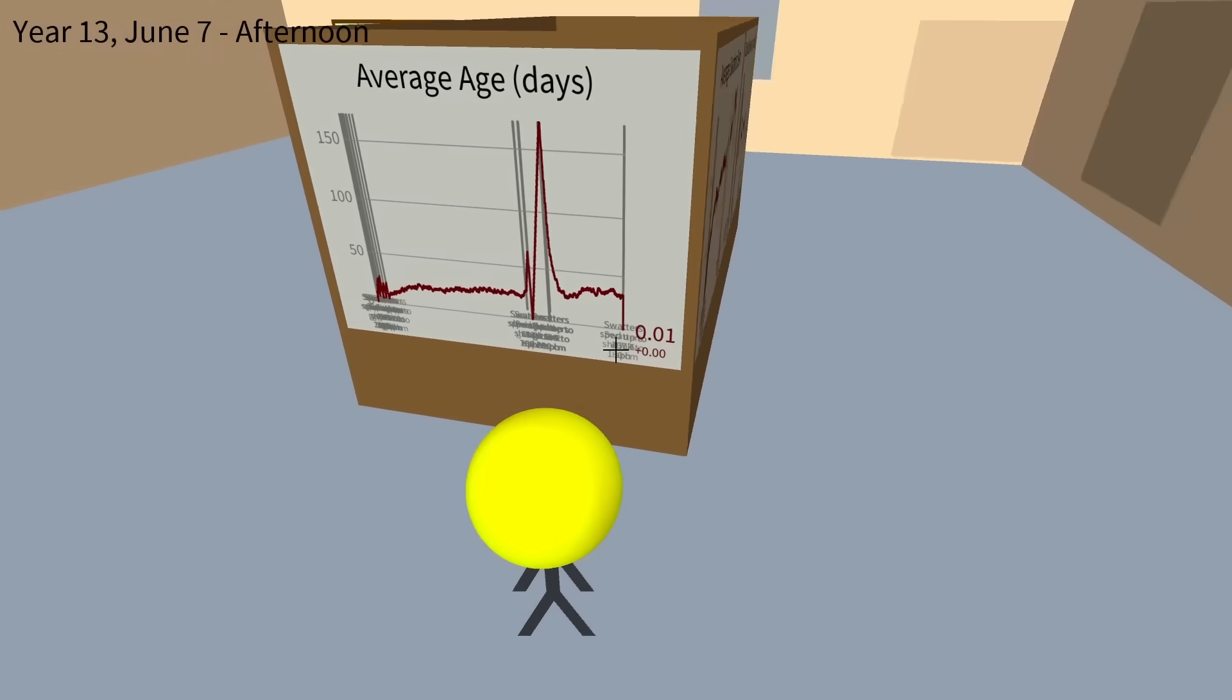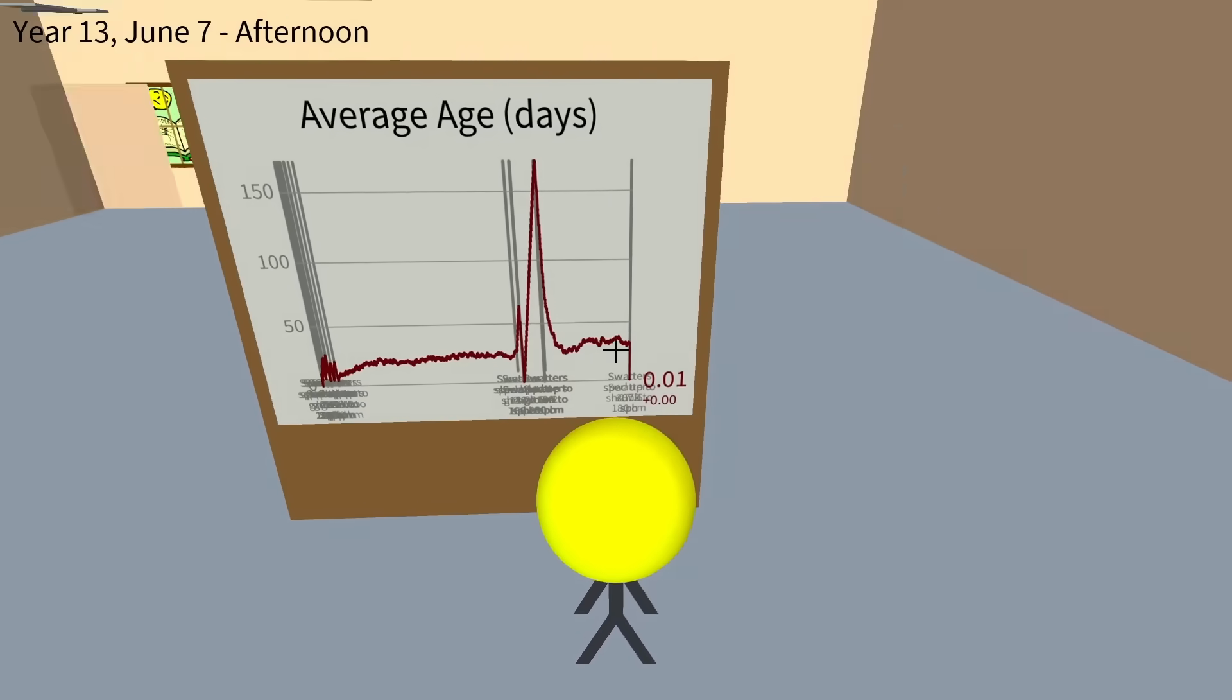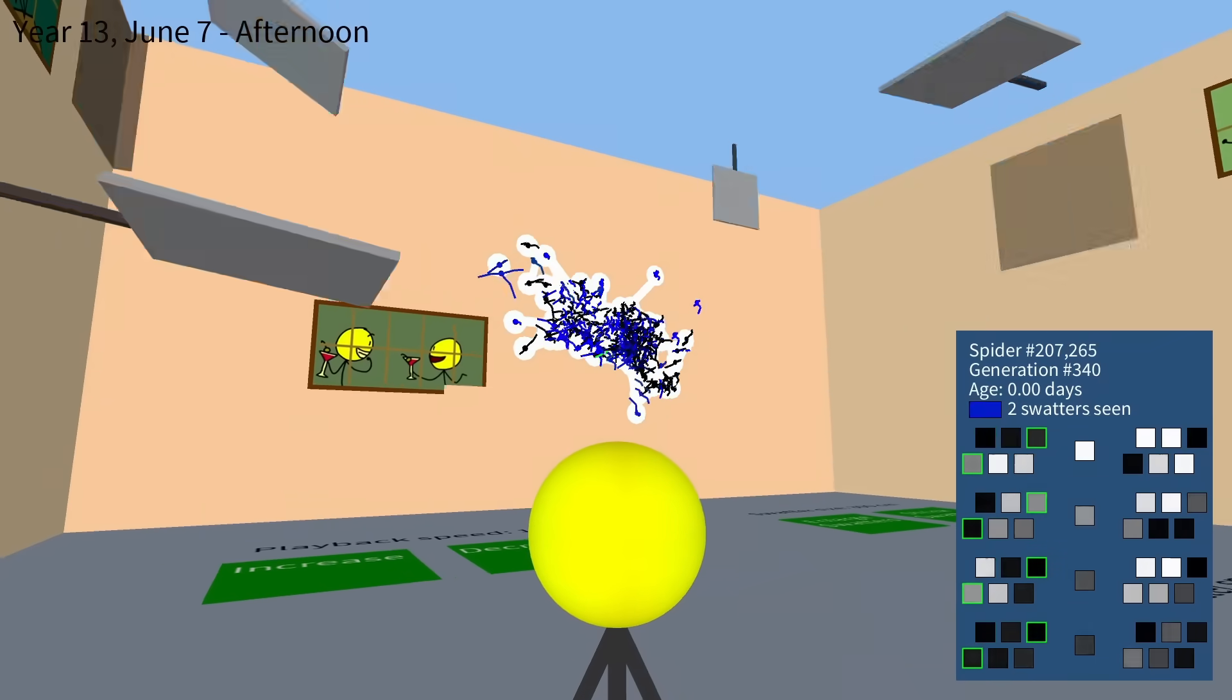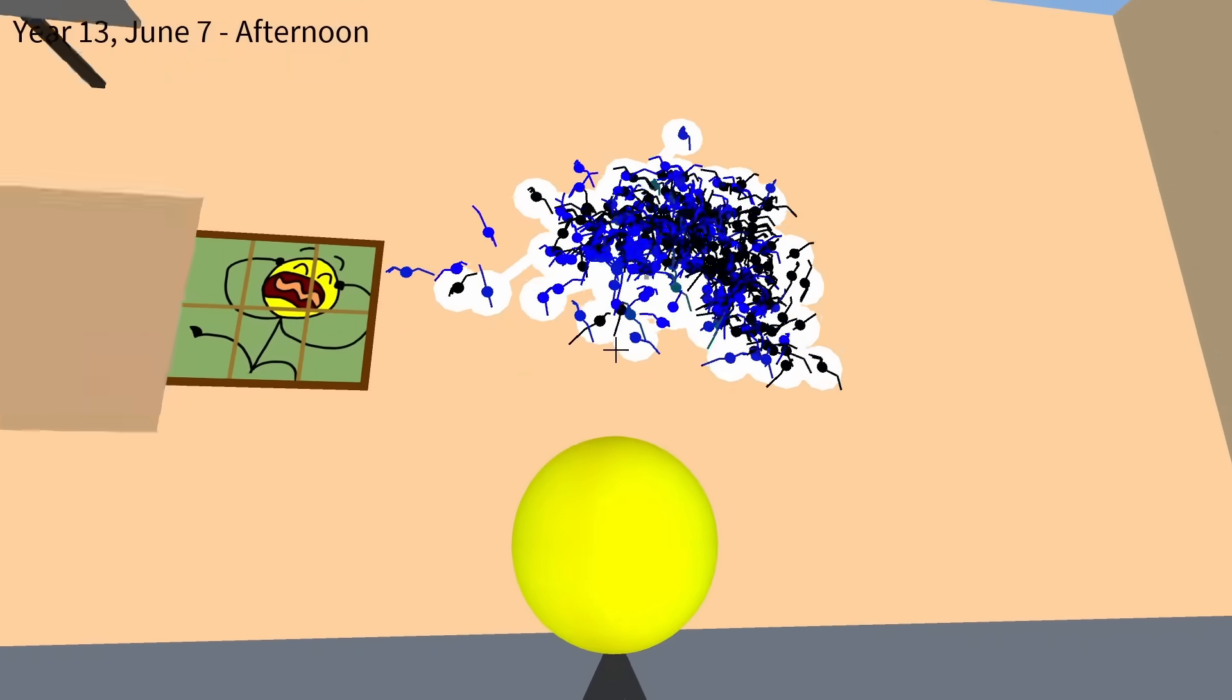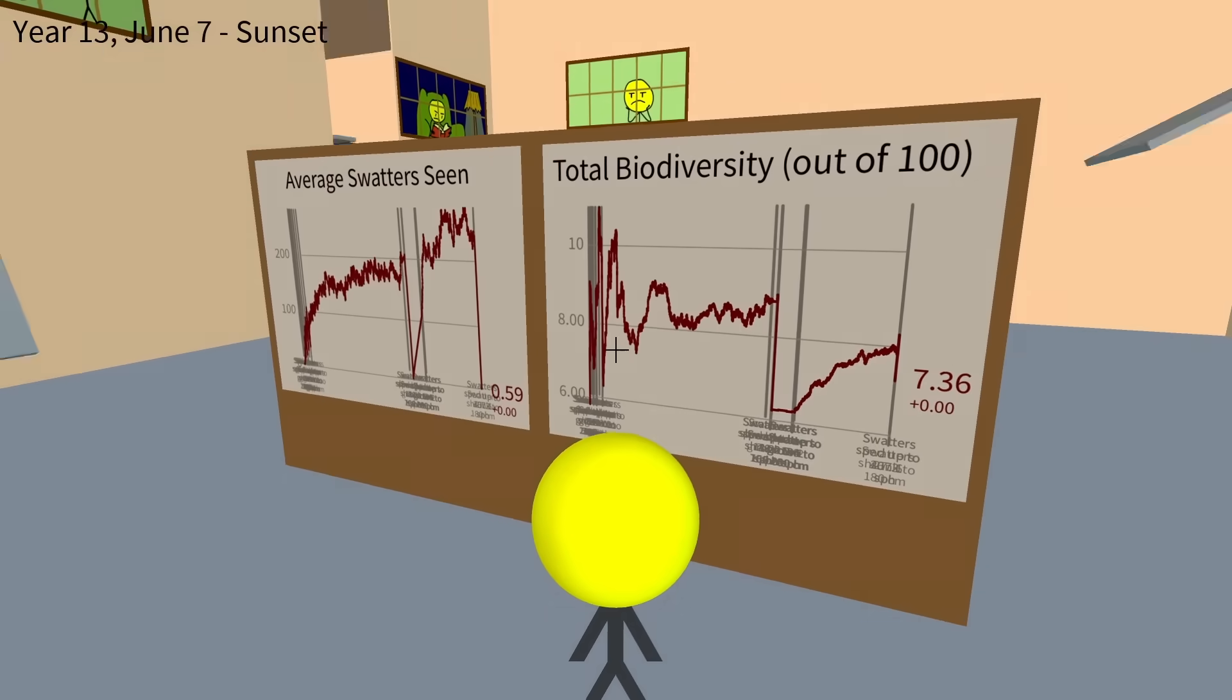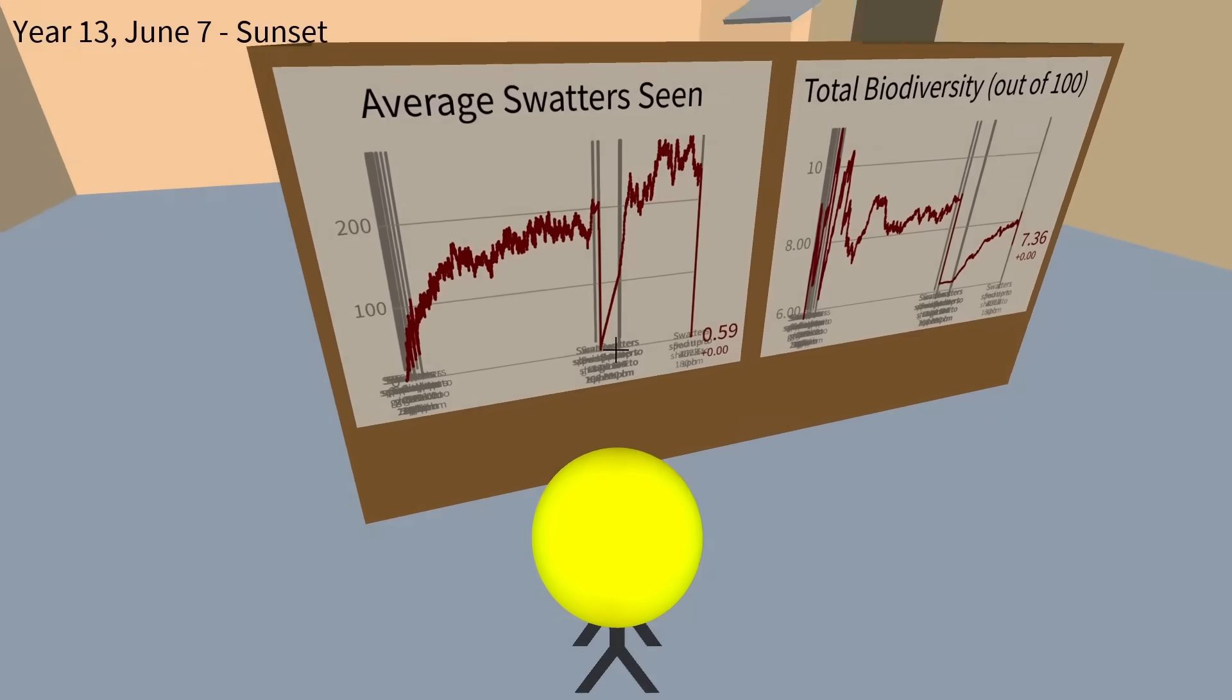The average age is 0.06, which is to be expected. The average age is 0.01 now, literally like a hundredth of a day. I mean, it held steady at like 30 for a while, but now it's 0.06. Swatters seen less than one. You know that kind of makes sense, because they're all just living for a split second before they get hit. I'm surprised it's less than one. I guess it makes sense because if they ever see one, they're dead.